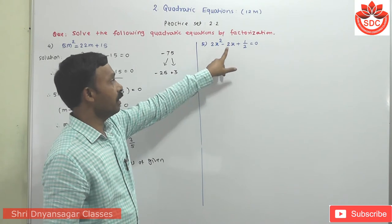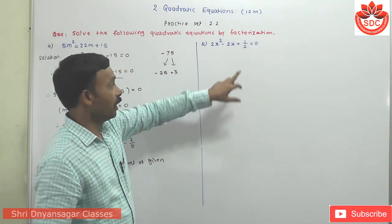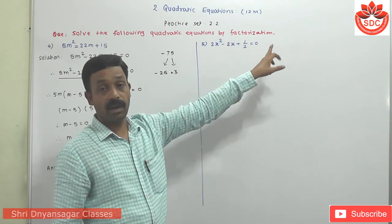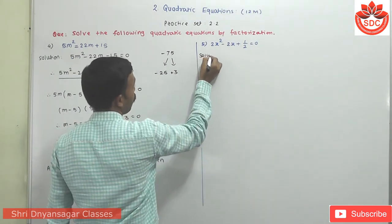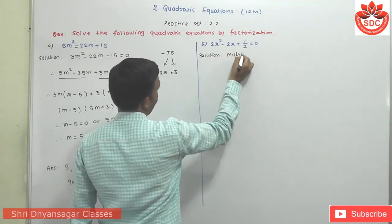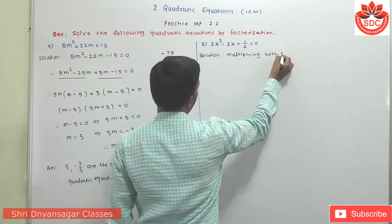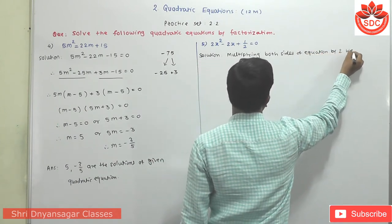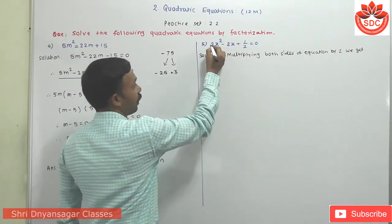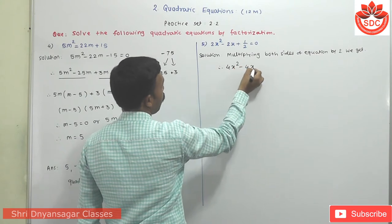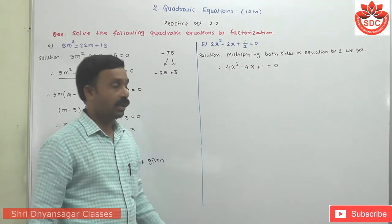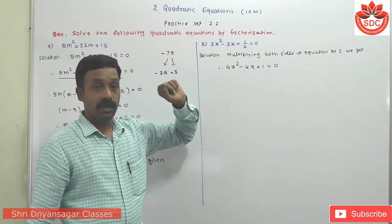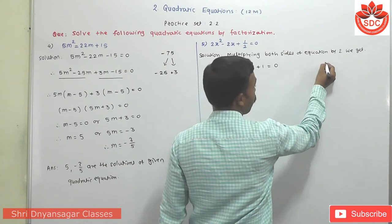The next question is 2x² - 2x + 1/2 = 0. Here observe carefully — the denominator is 2, so we remove it by multiplying both sides of the equation by 2. When we multiply, it becomes 4x² - 4x + 1 = 0. This is in the form ax² + bx + c = 0 where A = 4, B = -4, and C = 1. Find the product of AC: 4 × 1 = 4.